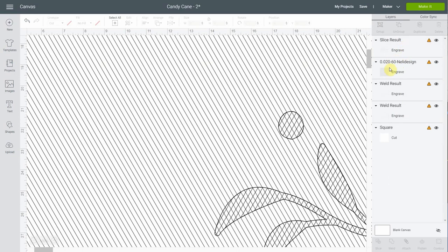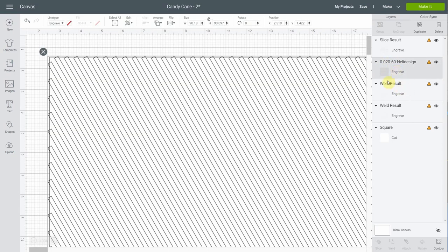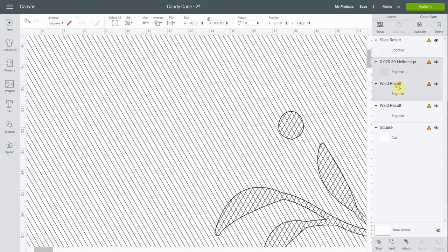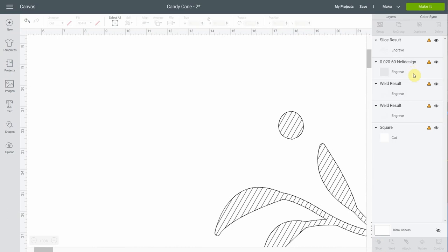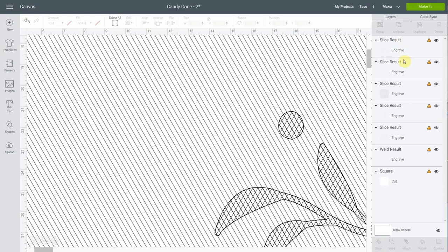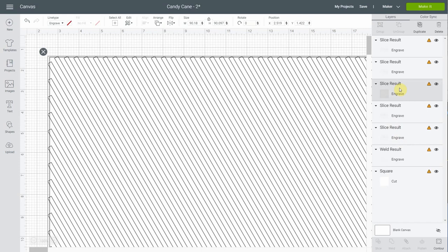Then we're going to do the same thing with the next one. So the 0.02 60 degrees with another weld result holding the shift key. And we're going to slice. So as I said, you don't really need to figure out what's going on right here. You just need to wait and see the new four slice result that we have. Now you're going to see five because that's the one. The last one is the one that we had before. So don't mix it. But we're going to keep only one.